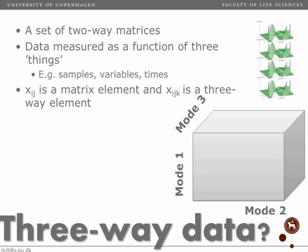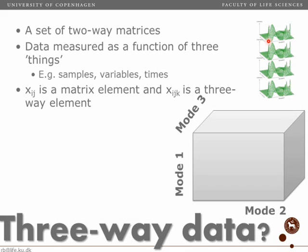We can easily extend data because when we have three-way data, we simply measure as a function of one additional thing. So we might measure different samples as a function of samples, we measure variables — for example, spectra — and we measure spectra at different time points. So for every one sample, we would get a matrix of spectra measured across different time points. Up here to the right, you see another very common example coming from fluorescence spectroscopy, where every sample is a landscape of intensities measured as a function of excitation and emission. We will get back to that.